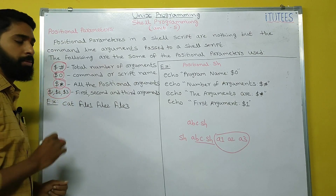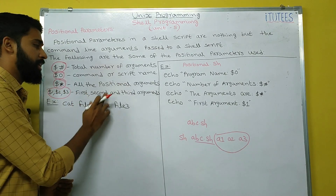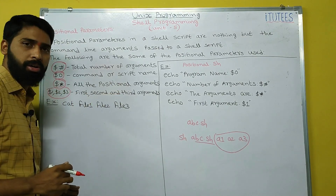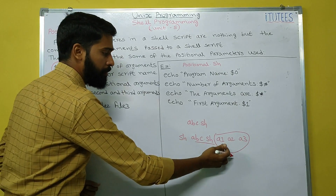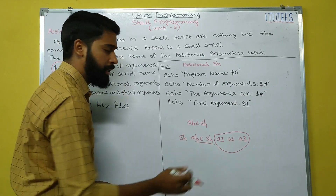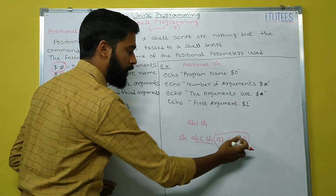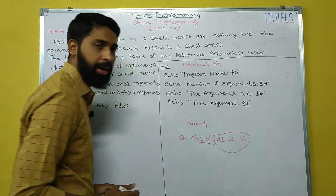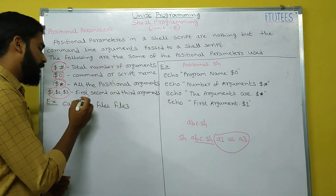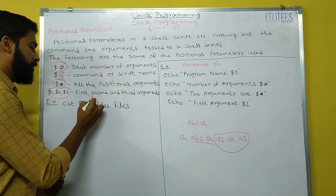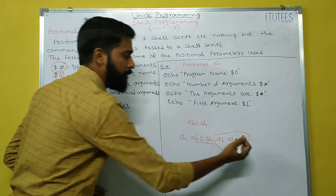Dollar 1, dollar 2, dollar 3 means first, second, and third arguments. Here dollar 1 means a1, dollar 2 means a2, dollar 3 means a3. If you have dollar 4, what it means? That is the fourth argument.